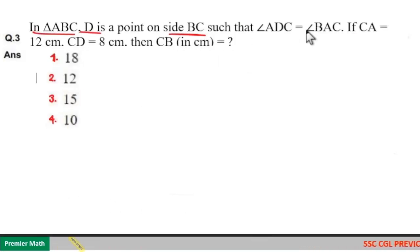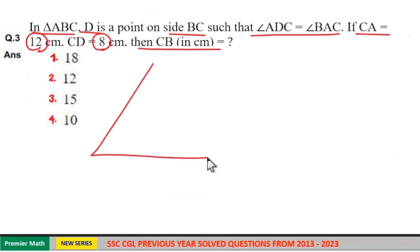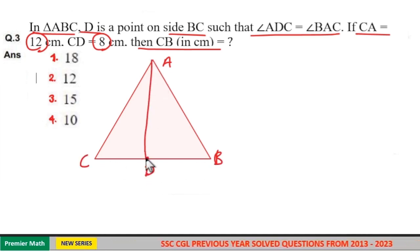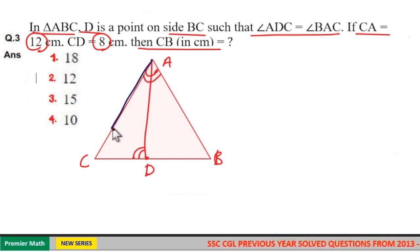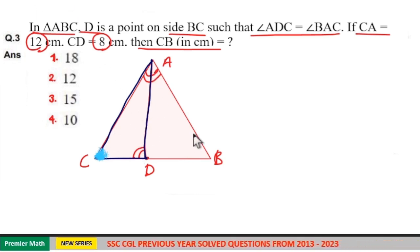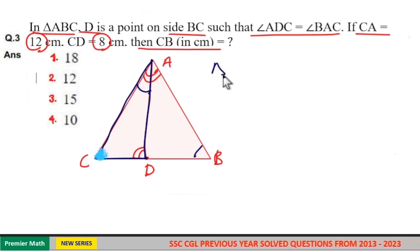In triangle ABC, D is a point on side BC such that angle ADC equals angle BAC. If CA is 12 cm, CD is 8 cm, then BC is — here this is triangle ABC and D is point on BC. Angle ADC equals angle BAC. If you take the smaller triangle and the larger triangle, these two triangles are similar because angle C is common, and angle A in the larger triangle equals angle ADC in the smaller triangle. Two angles equal means remaining third angle is also equal. So triangle ABC is similar to triangle DAC.